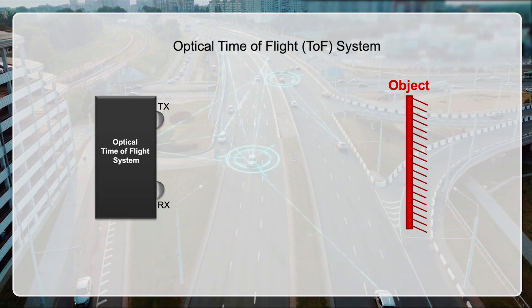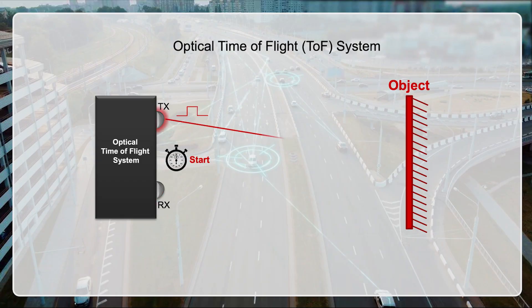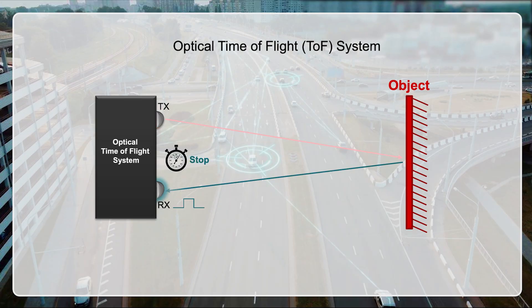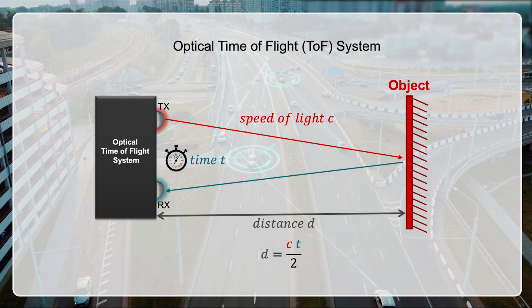Optical time-of-flight systems consist of a light transmitter and a light receiver. These systems measure distance by emitting a pulse of light onto an object and receiving the reflected pulse of light from the object. The time it takes for the light to travel to and from the object can be used to calculate the distance between the transmitter, receiver, and the object.